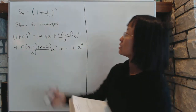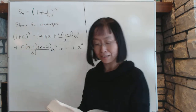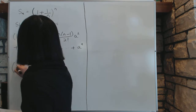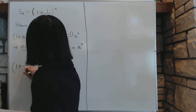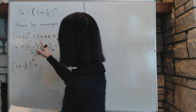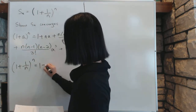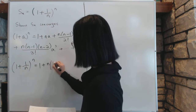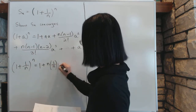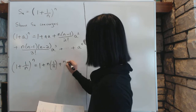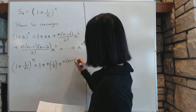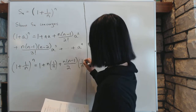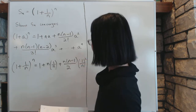We are going to substitute 1 over n into a to calculate our expansion. That gives us: 1 plus 1 over n to the power n equals 1, then the second term — substituting — we get n times 1 over n, which is just 1. The second term is n times (n minus 1), divided by 2, times 1 over n squared. That's the second term.